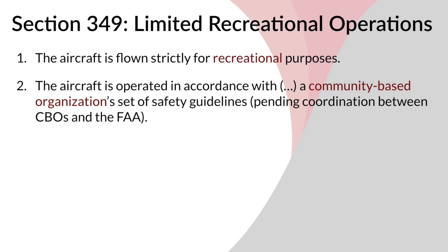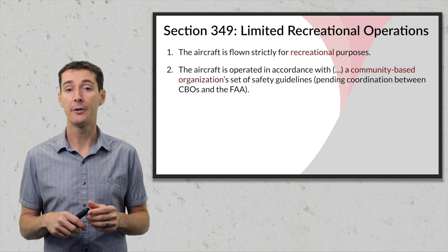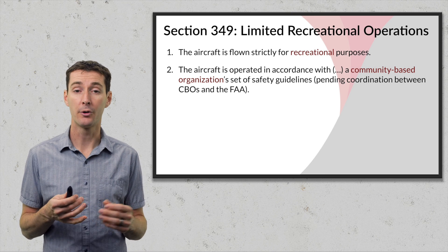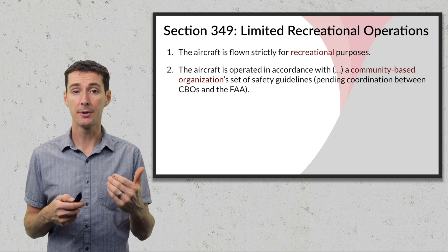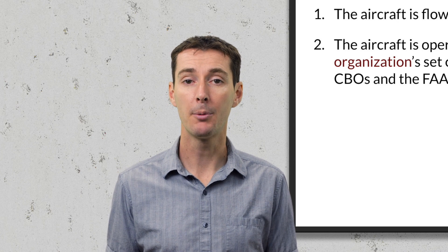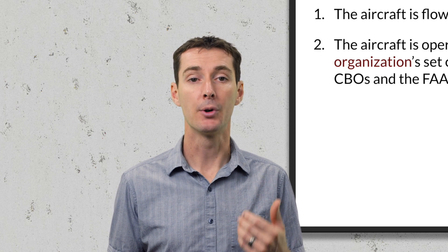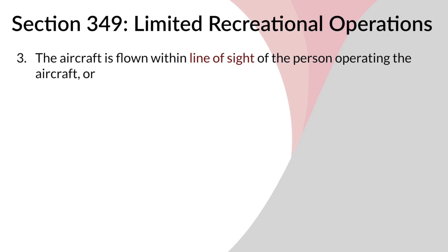Limitation number two states that the aircraft must be operated in accordance with a community-based organization (CBO) set of safety guidelines. CBOs have been around a long time — people flying remote piloted aircraft at specific airfields with specific rules. The FAA said they will work with CBOs to come up with rules for these locations. This is not fully in effect yet because the FAA still has to coordinate with CBOs.